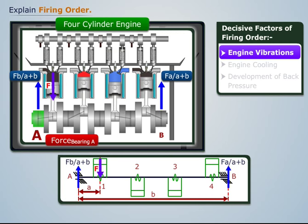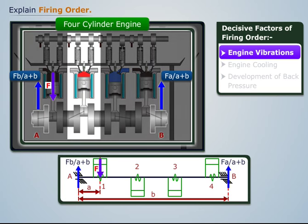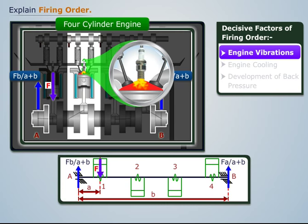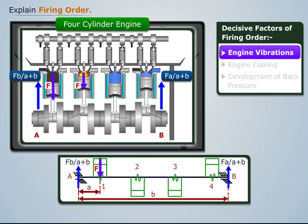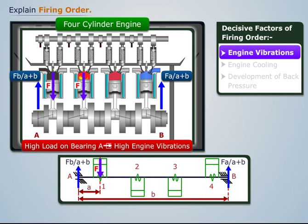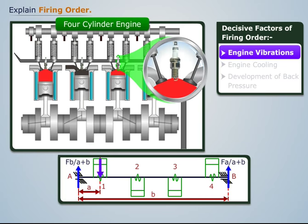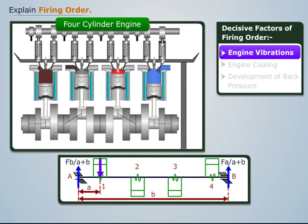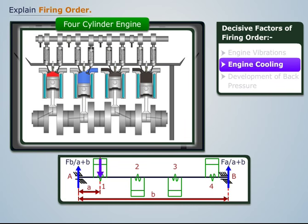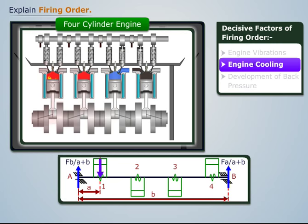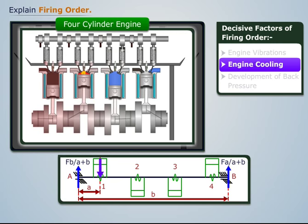Clearly, the force in bearing A is greater than the force in bearing B. So if we fire the second cylinder next, the load on bearing A will increase, which may cause engine vibrations. To reduce this and even out the load, we need to fire the third cylinder.